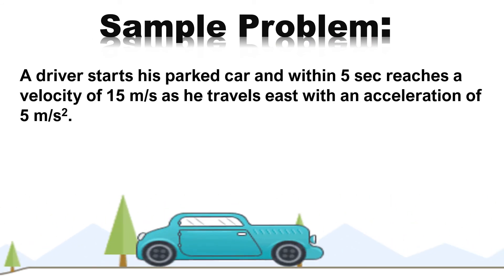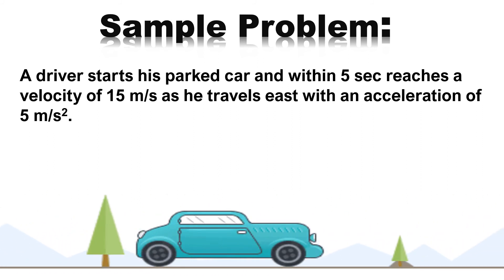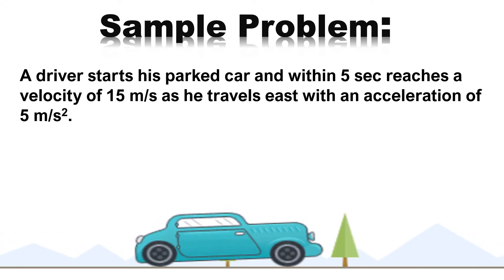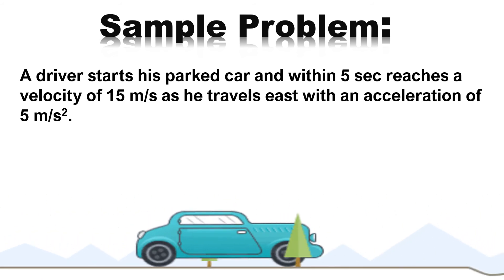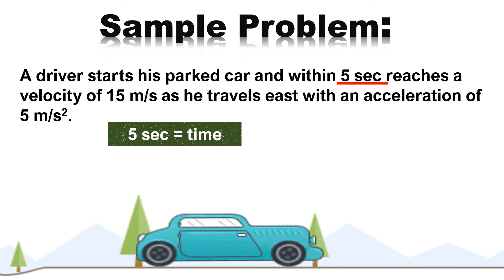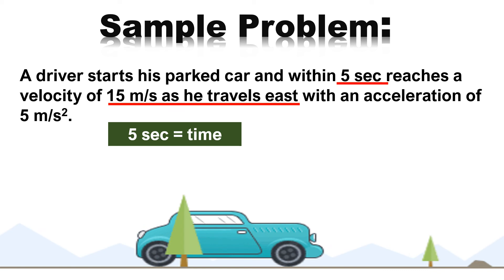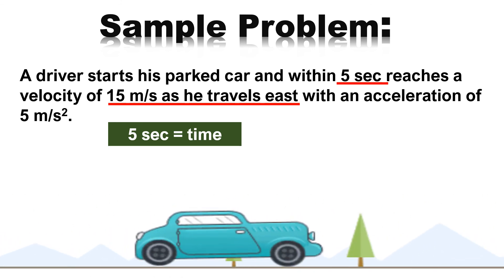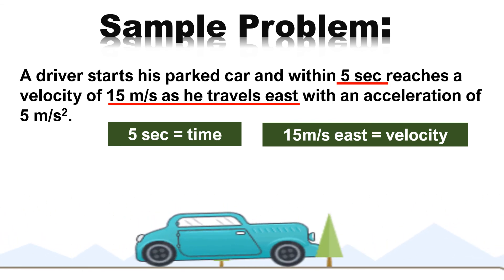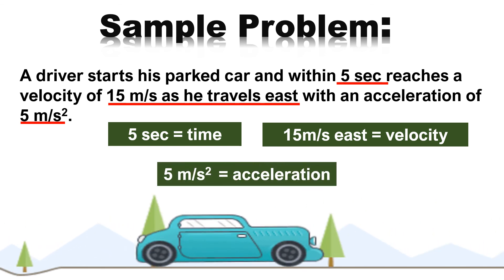Sample problem: a driver starts his parked car, and within 5 seconds, reaches a velocity of 15 meters per second as he travels east, with an acceleration of 5 meters per second squared. Hahanapin natin ang mga quantities ng vector quantity. Una, 5 seconds — ito ay halimbawa ng time. Ang 15 meters per second east ay halimbawa ng velocity. At panghuli, ang 5 meters per second squared ay halimbawa ng acceleration.